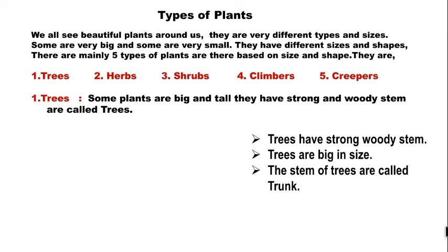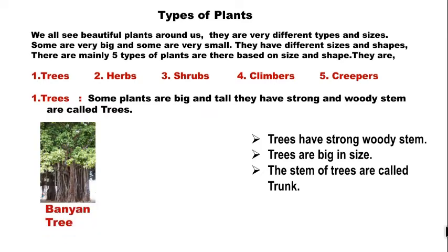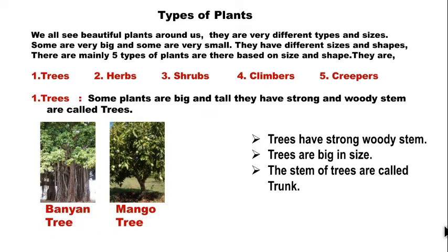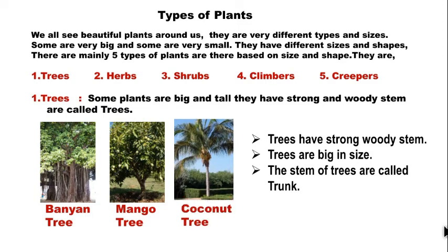The first type is trees. Some plants are big and tall and have a strong and woody stem — these are called trees. For example: banyan tree, mango tree, coconut tree. Trees have a strong stem and are big in size. The stem of trees is called the trunk.